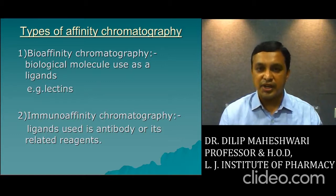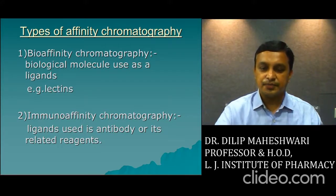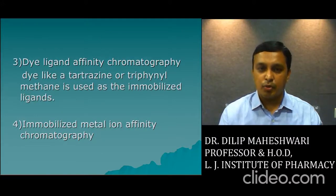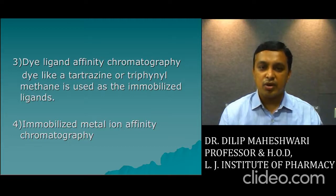Number one: bioaffinity chromatography, where biological molecules are used as ligands — for example, lectins. Number two: immunoaffinity chromatography, where the ligand used is an antibody or its related reagent. Number three: dye-ligand affinity chromatography, where dye-ligands such as tetrazine or triphenyl methane are used as immobilized ligands. Number four: immobilized metal ion affinity chromatography, where different types of metals are used as ligands.